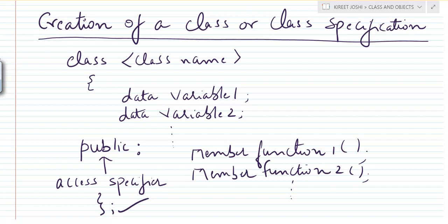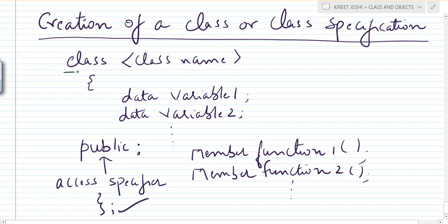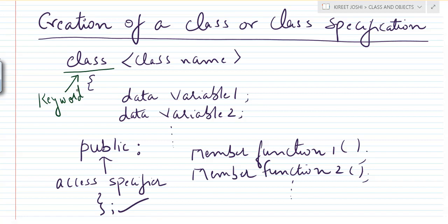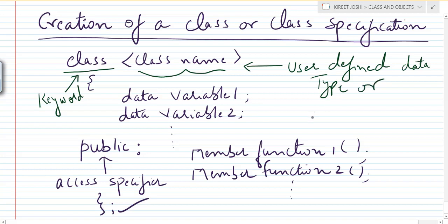Now we will see what these constructs mean. The 'class' keyword notifies the compiler that a user has created their own data type. So the class we are creating — this class name — is a user-defined data type, or you can say it is an abstract data type, because a user is creating their own data type.